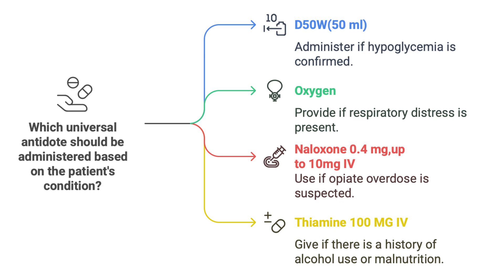While figuring out the underlying cause, there are standard treatments to give for pretty much every case of altered LOC, captured by the mnemonic DONT: Dextrose, Oxygen, Naloxone, and Thiamine. These are often the first-line treatments given while still working to identify the cause, and they can make a huge difference in preventing further damage.